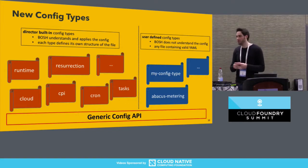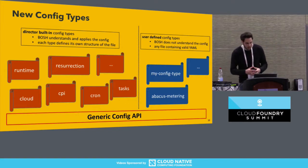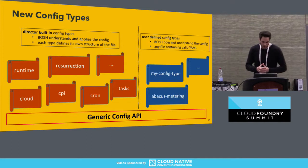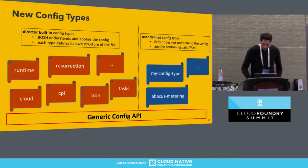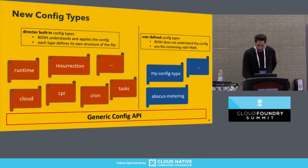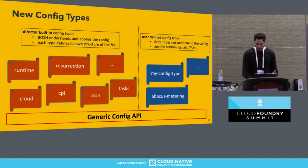For example, BOSH operators can use the generic config API to manage other configuration files for other Cloud Foundry services. We will see an example in a second in the demo. So let's jump to the demo and explore the generic config functionalities, including an example of a user-defined type.